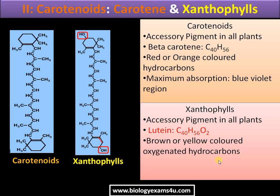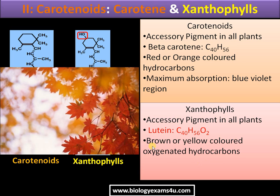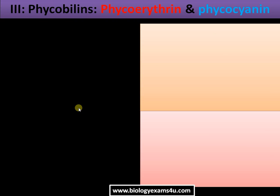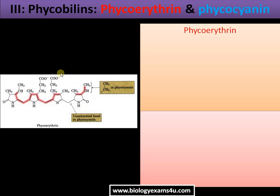Xanthophylls are brown or yellow-colored oxygenated hydrocarbons, while carotenoids are reddish-orange. These are responsible for the color of autumn leaves. As the leaf matures, chlorophyll deteriorates and is replaced by these accessory pigments — carotenoids and xanthophylls — which is why ripened leaves appear orange or yellowish.